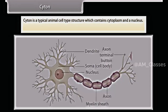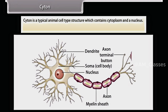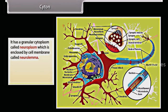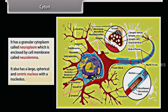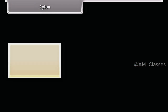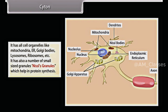Cytone is a typical animal cell-type structure which contains cytoplasm and a nucleus. It is spherical in shape and about 4 to 135 micrometers. It has a granular cytoplasm called neuroplasm, enclosed by a cell membrane called neurolemma. It also has a large spherical centric nucleus. It has all cell organelles like mitochondria, ER, Golgi bodies, lysosomes, ribosomes, etc. It also has a number of small-sized granules called Nissl's granules, which help in protein synthesis.